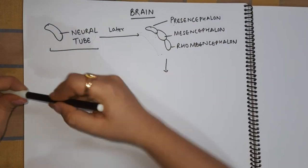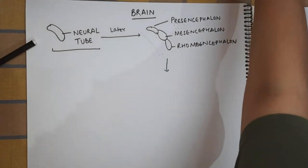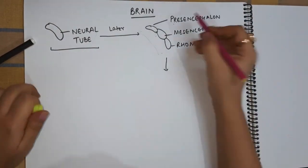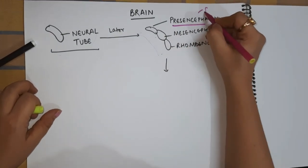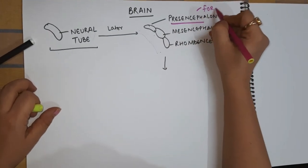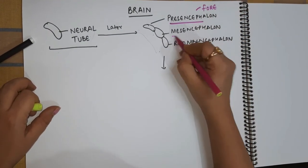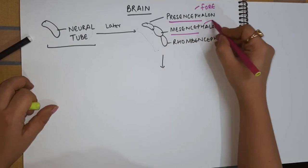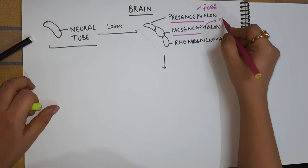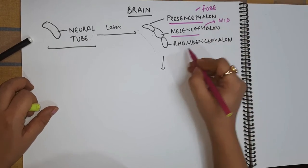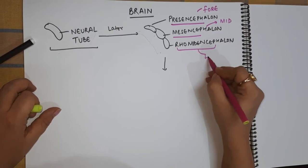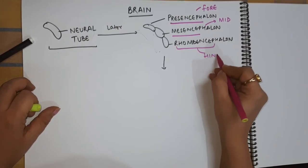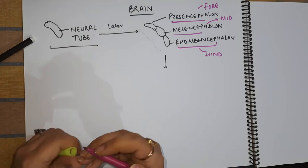So here I want to highlight that prosencephalon grows and develops into the forebrain, the mesencephalon grows and develops into the midbrain, and the rhombencephalon grows and develops into the hindbrain.